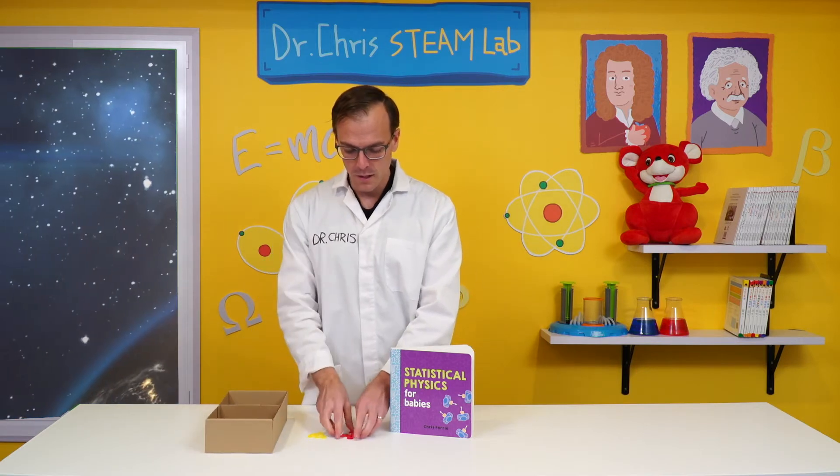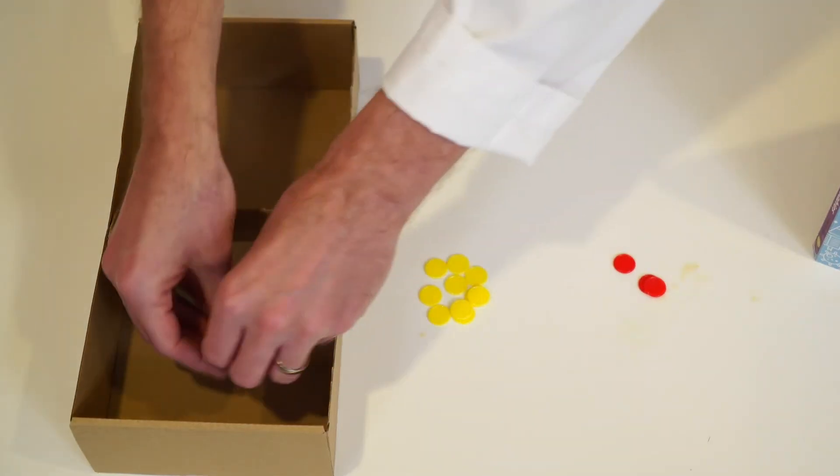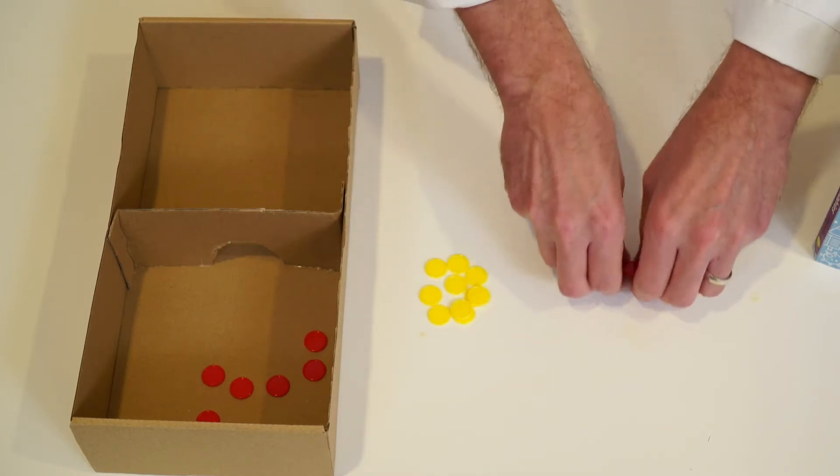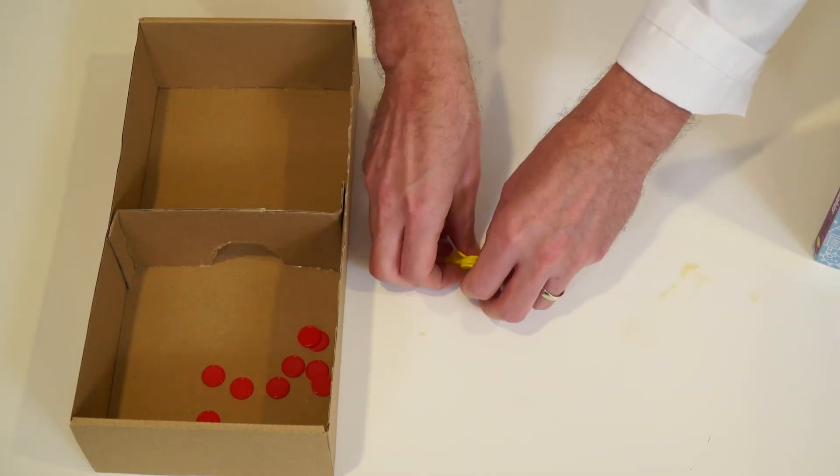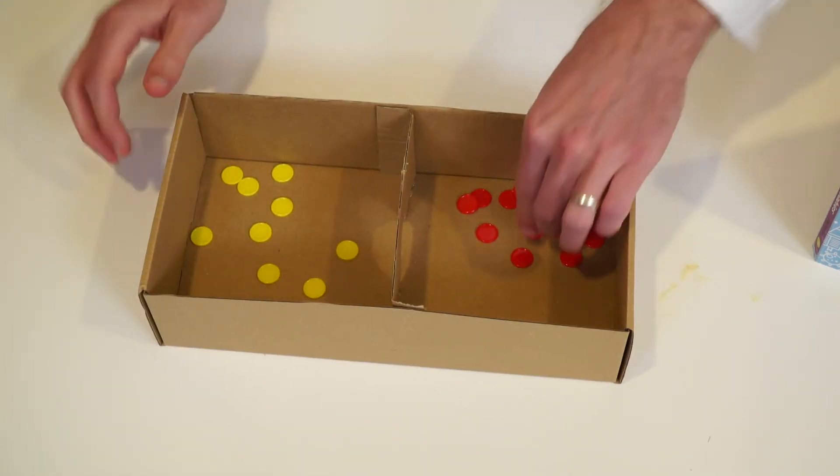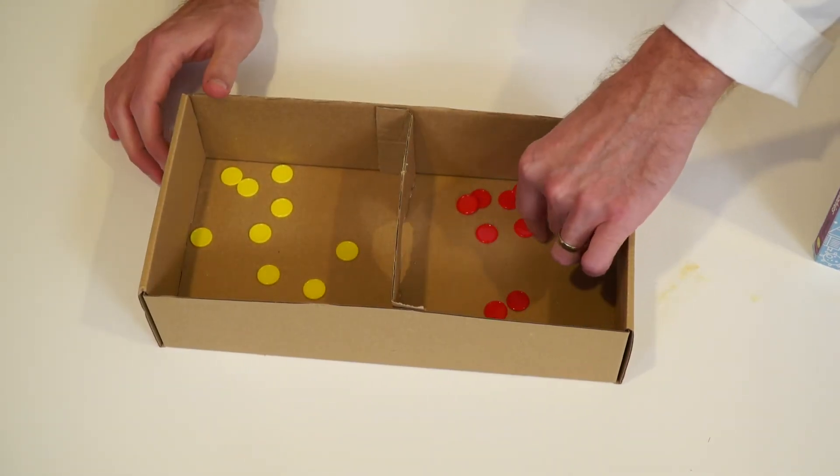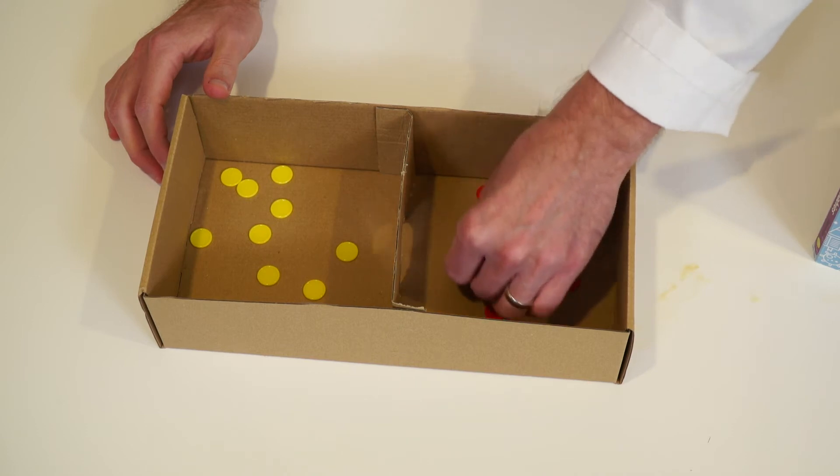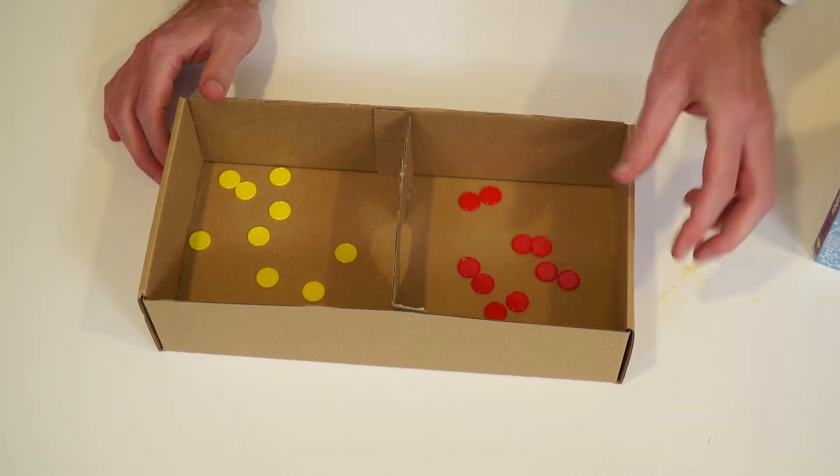And some game tokens. You place the tokens inside the box. And you have two, four, six, eight, ten of each color.